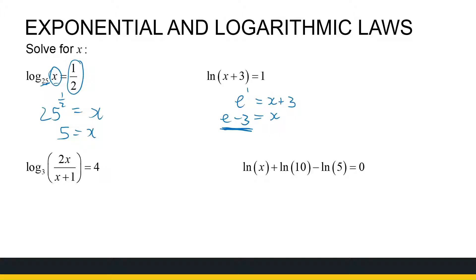We look at the next one. If I change that to exponential form, I've got 3 to the power 4 is equal to 2x over x plus 1. Now, 3 to the power 4 is 81, so I've got 81 times x plus 1 is equal to 2x, which gives 81x plus 81 equals 2x. So that means I've got 79x equals minus 81, which means x is equal to minus 81 over 79. Ugly answer, but that's how we work with it.